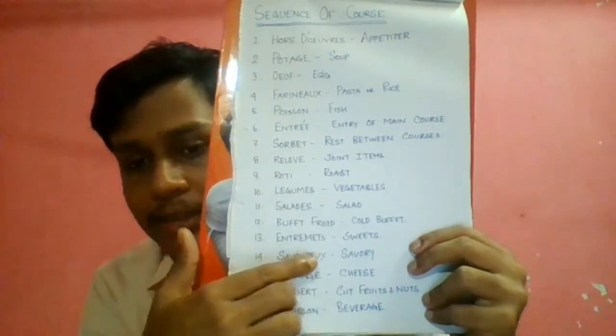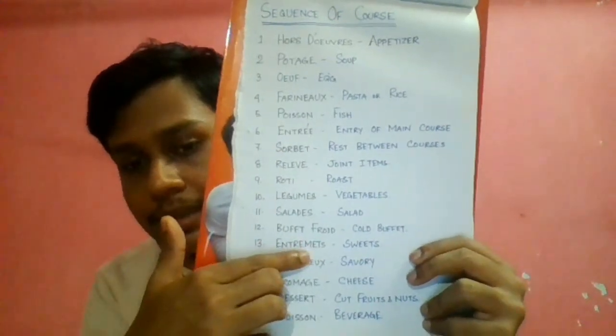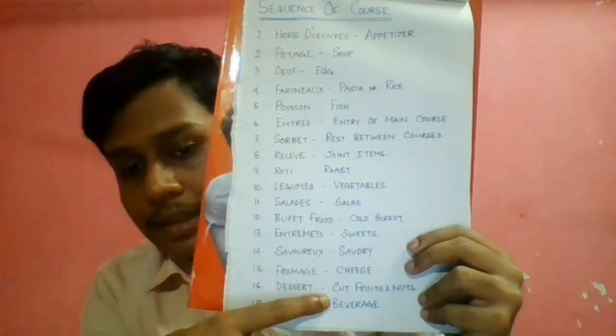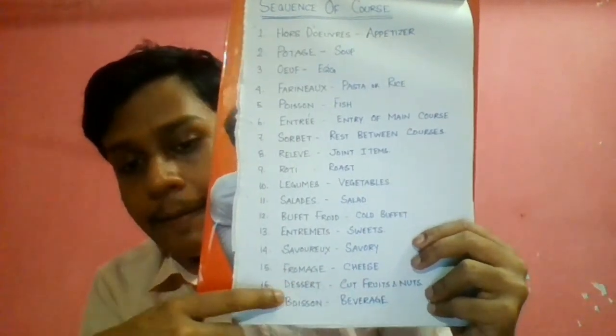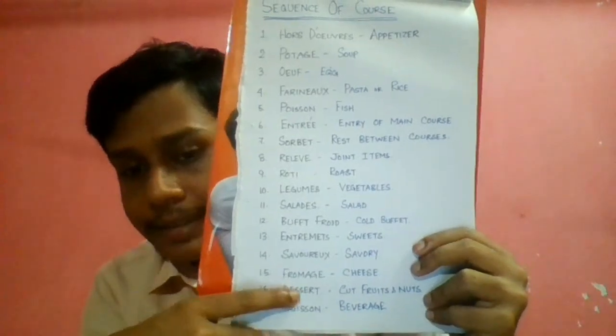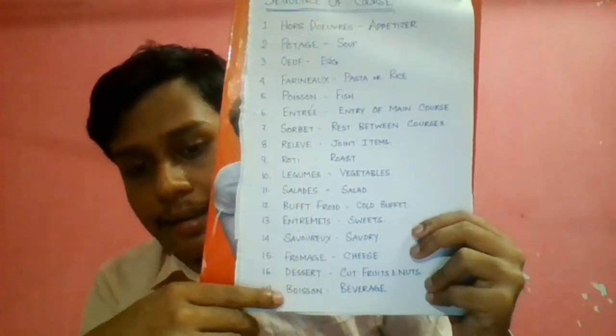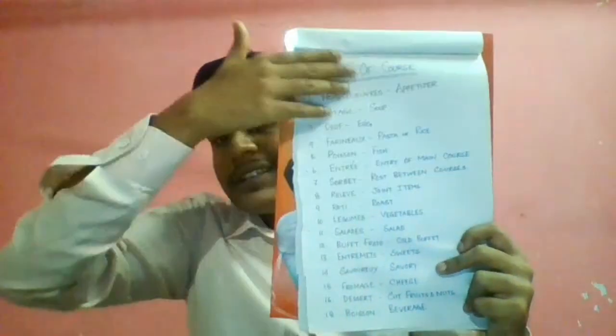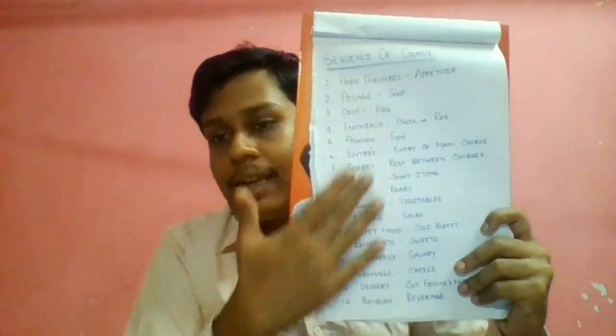Fromage means cheese items, like cheesecakes. Then they serve Dessert — dessert means cut fruits and nuts. We should not confuse sweets with dessert. Sweets means Entremets, the French name for sweets. Dessert is the French name for cut fruits and nuts. At last, they serve Boisson, which means beverages — alcoholic or non-alcoholic, like tea or coffee. That is the 17-course French classical menu.